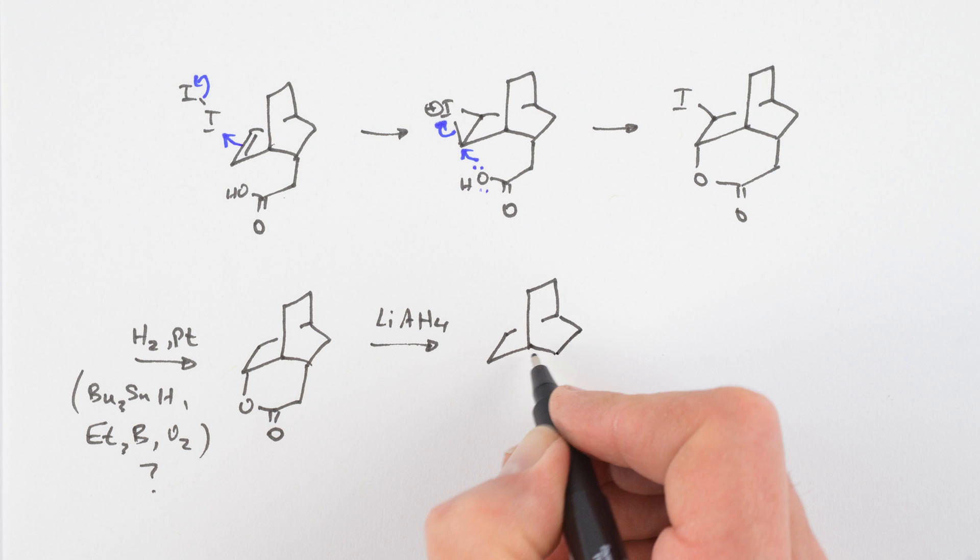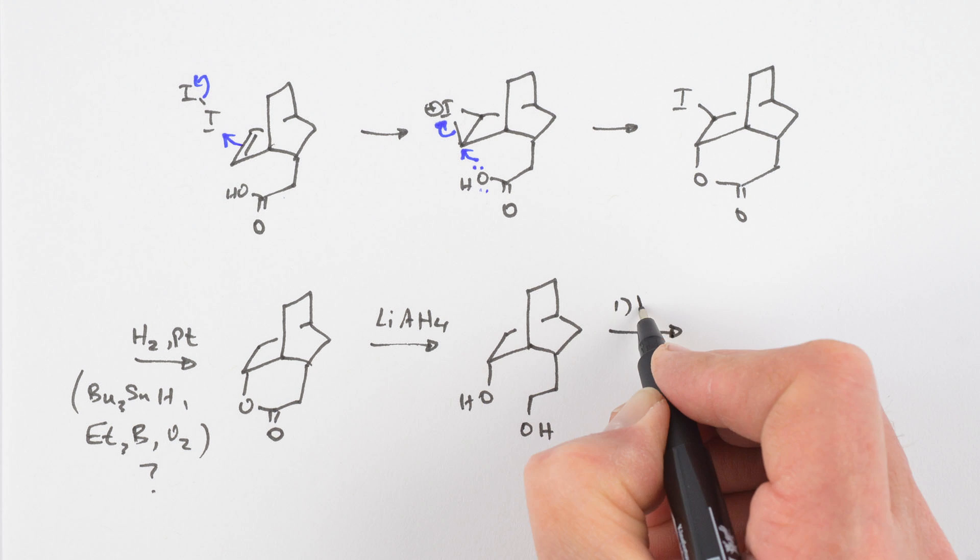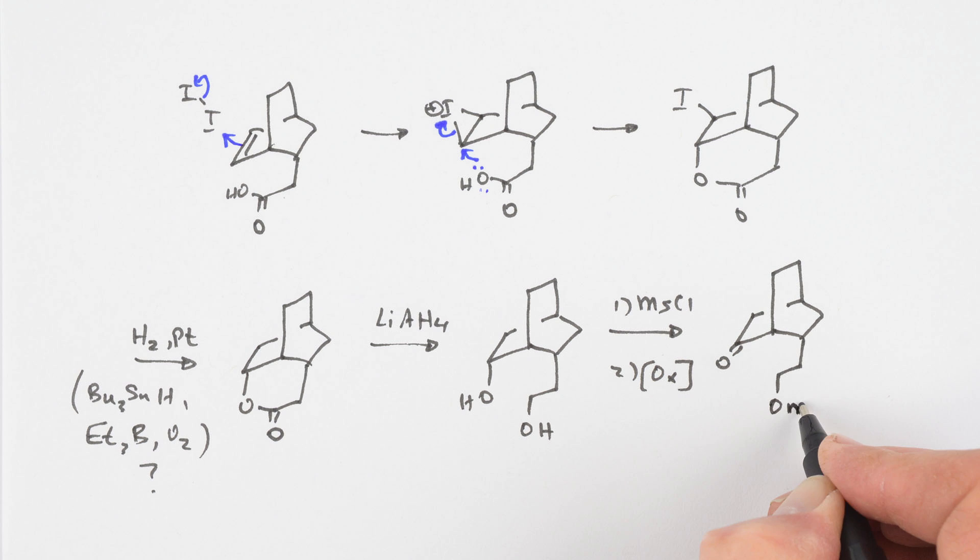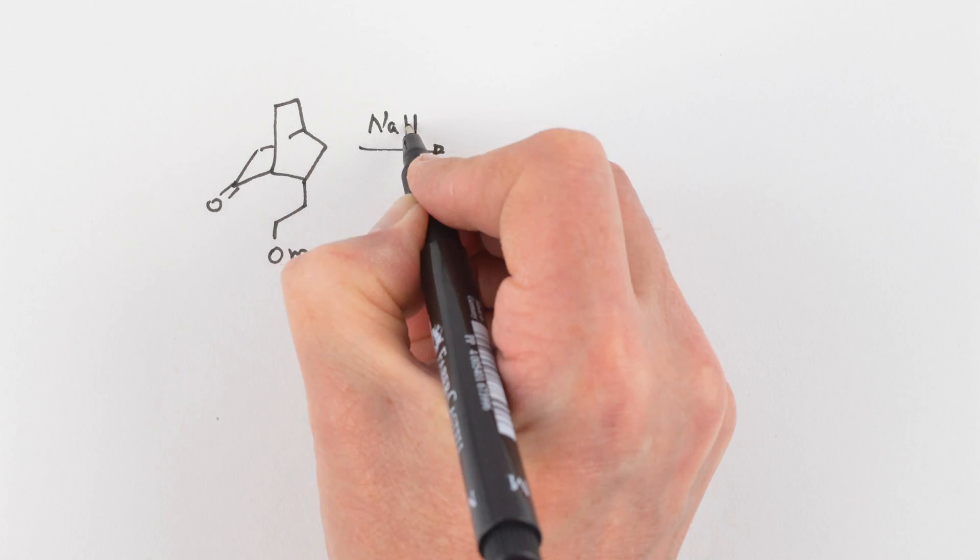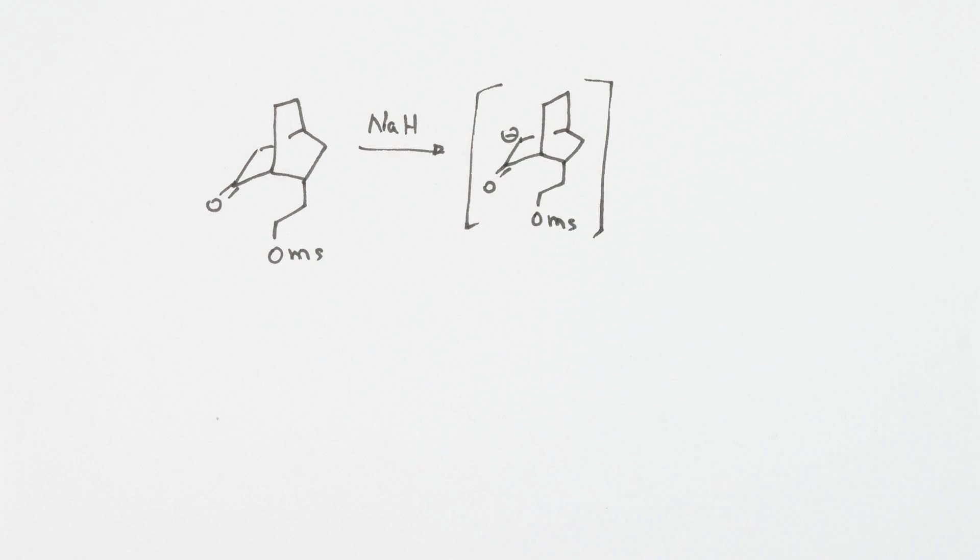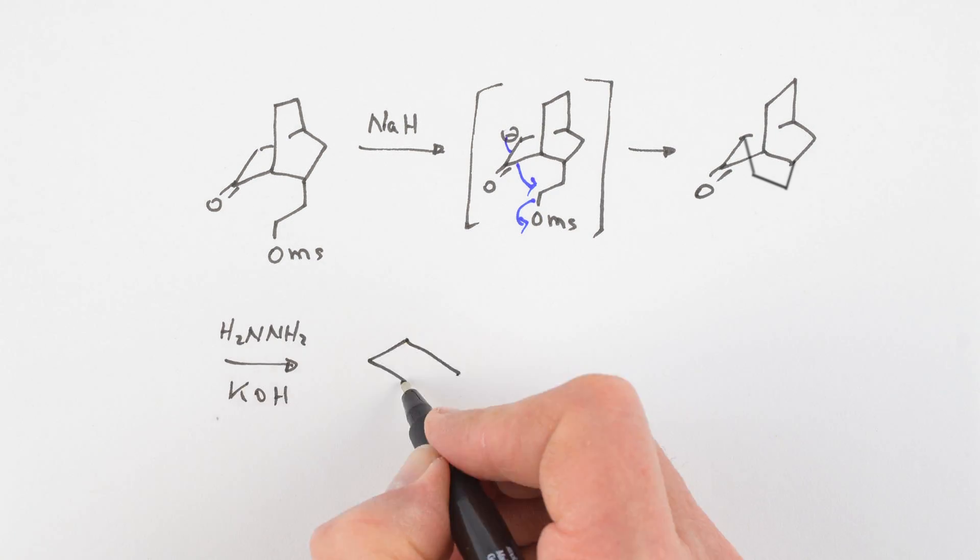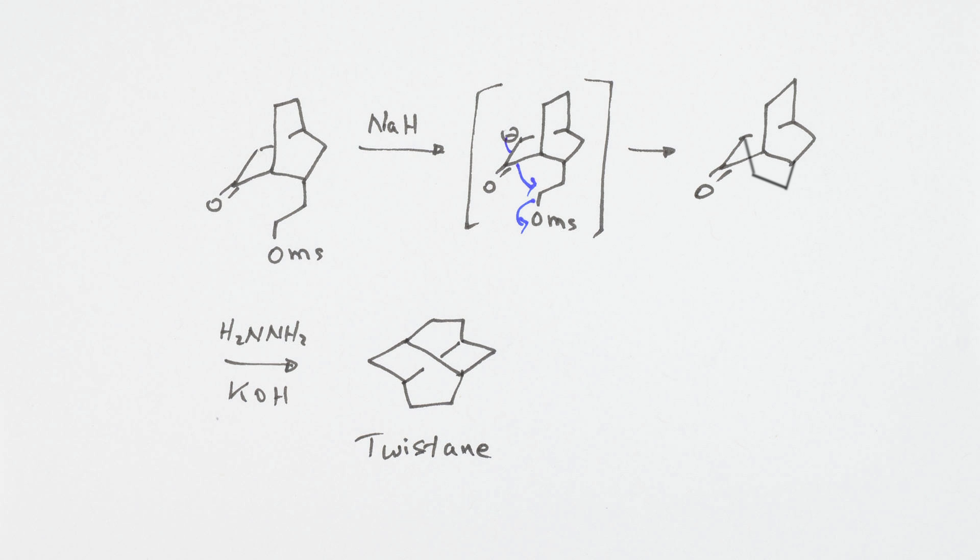Lithium aluminum hydride reduction of this lactone gave the diol. The primary alcohol was preferentially mesolated. The secondary alcohol was oxidized to the ketone. Treatment of the ketone with sodium hydride produced the enolate, which displaced the mesolate. A classical Wolff-Kishner reduction gave twistane.